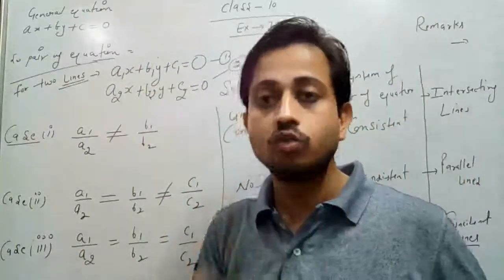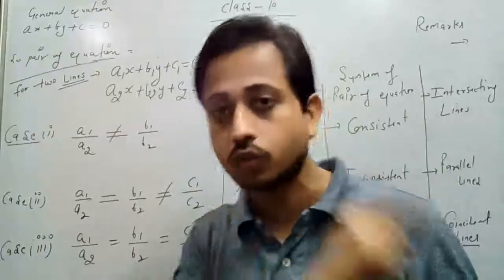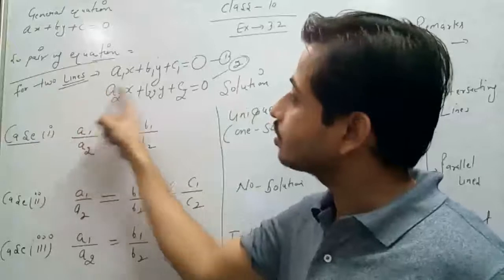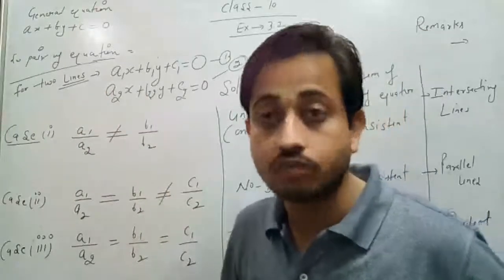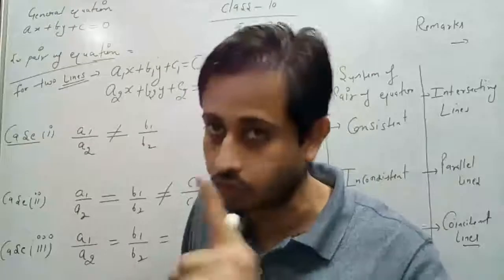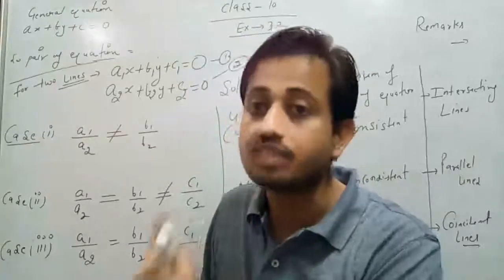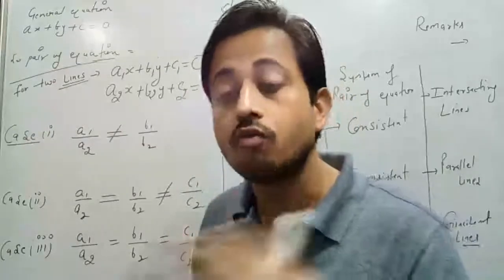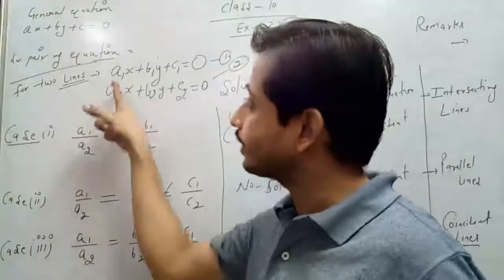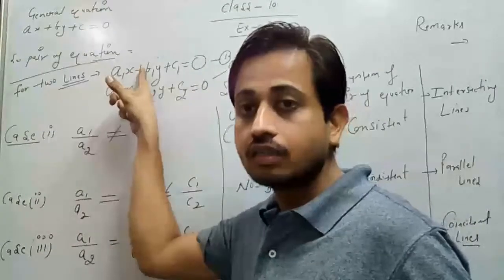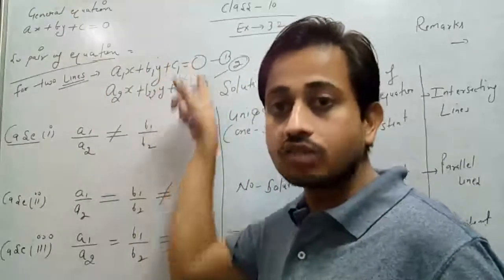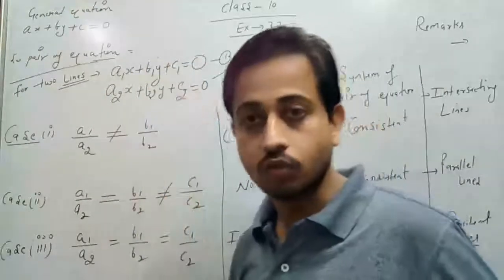Please make a note — you have to take the sign also. If the coefficient is negative, you have to take the negative sign as well. What you have to do is find out the ratio: a1 by a2 for the x-coefficients, b1 by b2 for the y-coefficients, and c1 by c2 for the constant terms. Then we have to check our three cases.